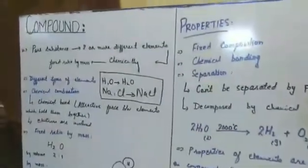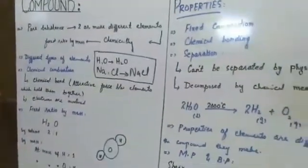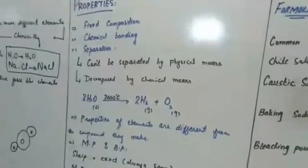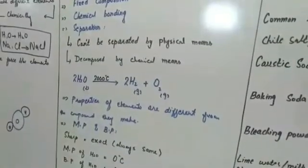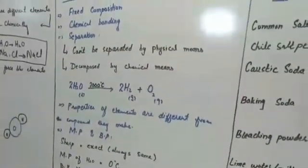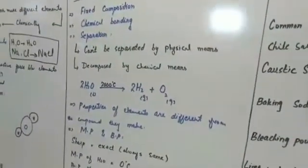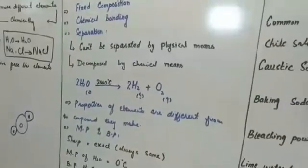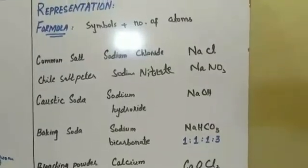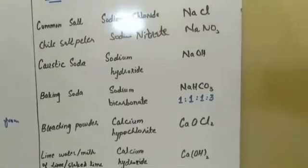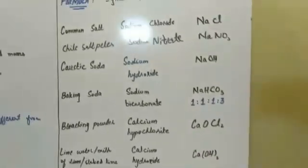To summarize: today we discussed compounds — what a compound is, as the chemical combination of two or more elements. We discussed their properties: sharp melting and boiling points, and the fact that they cannot be broken down easily and require chemical procedures for decomposition. We also covered the common names, chemical names, and formulas of certain common compounds. Remember, chili saltpeter has the formula NaNO3.